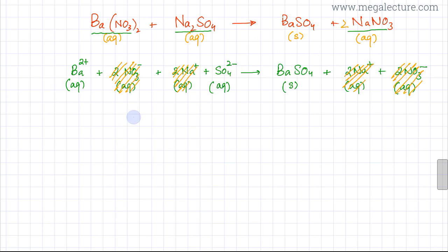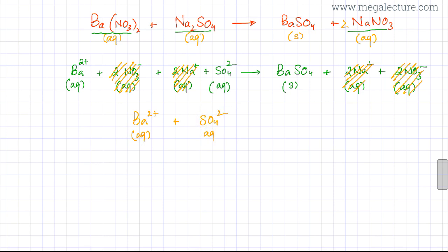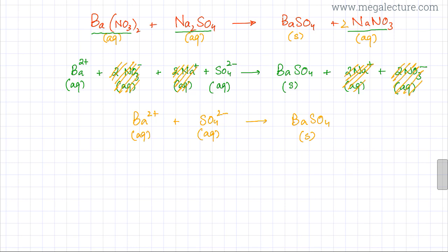The net ionic equation is: Ba²⁺(aq) + SO₄²⁻(aq) → BaSO₄(s). This is the net ionic equation for this reaction.